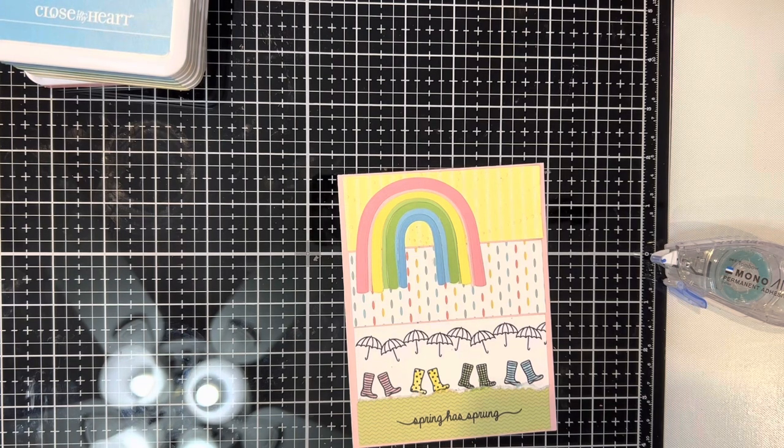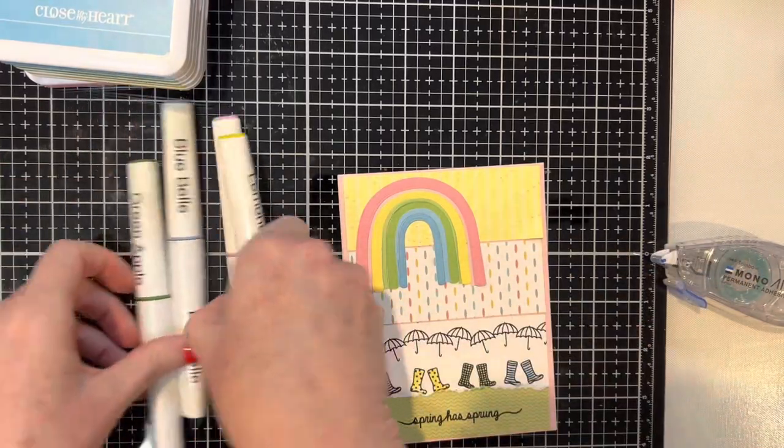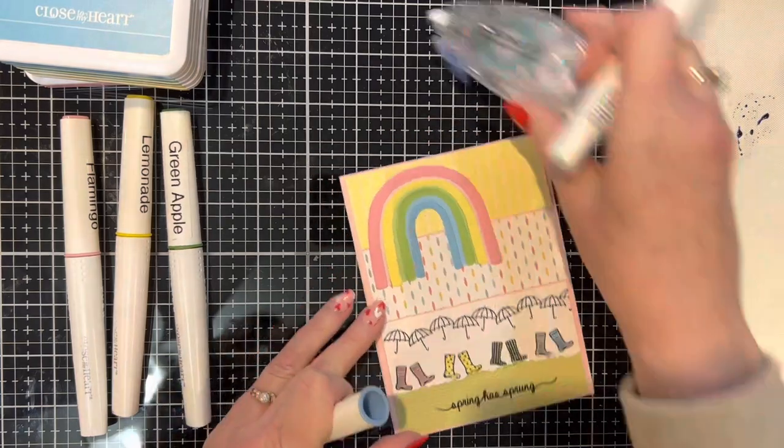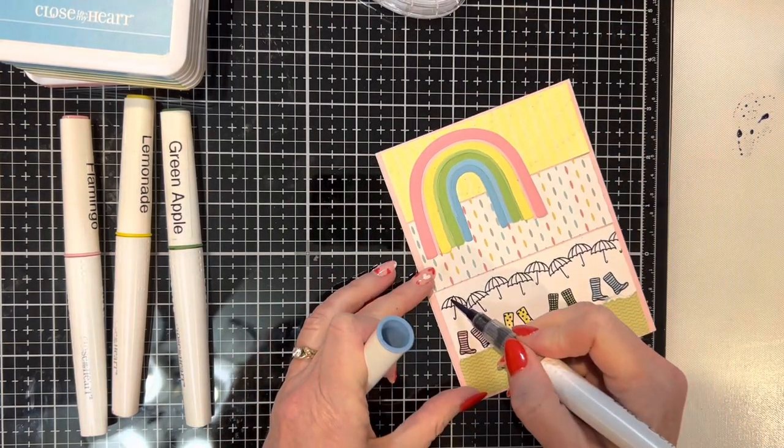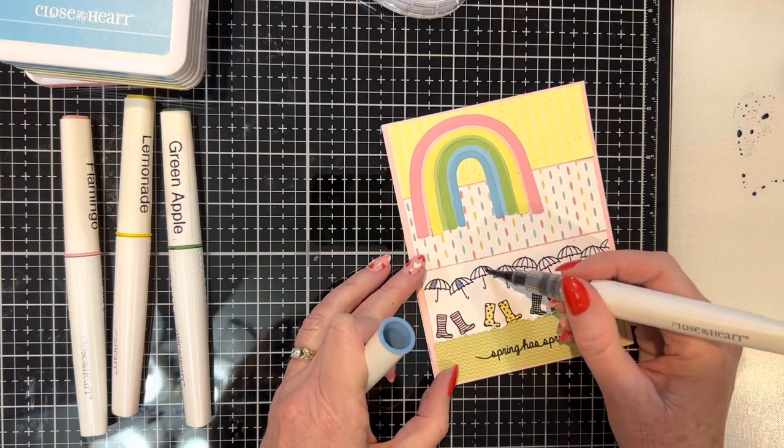The next thing I do is I come in with some shimmer brushes, and I believe I picked Flamingo, Lemonade, Green Apple, Blue Bell, which is retired, and Grape.